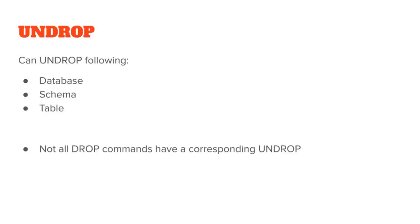UNDROP in Snowflake is a statement that allows you to restore a dropped object, such as a database, schema, table, or view, to its previous state. UNDROP relies on the Snowflake Time Travel feature, which stores historical snapshots of all objects in your account.